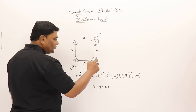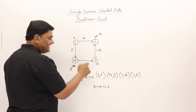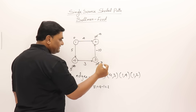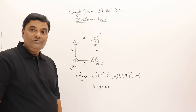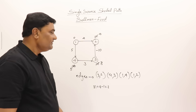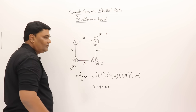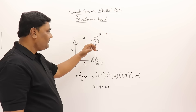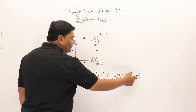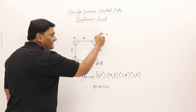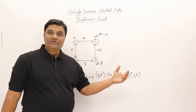Second pass: (3,2) — infinity minus 10, but vertex 2 is four so four is better — no change. Wait, (4,3) — five plus three is eight, less than infinity, so vertex 3 becomes eight. (1,4) and (1,2) remain same. Third pass: (3,2) — eight minus ten is minus two, which is less than four, so vertex 2 changes to minus two. (4,3) — five plus three is eight — no change. (1,4) — zero plus five is five — no change. (1,2) — zero plus four is four, but minus two is better — no change. Three passes done, shortest paths obtained.